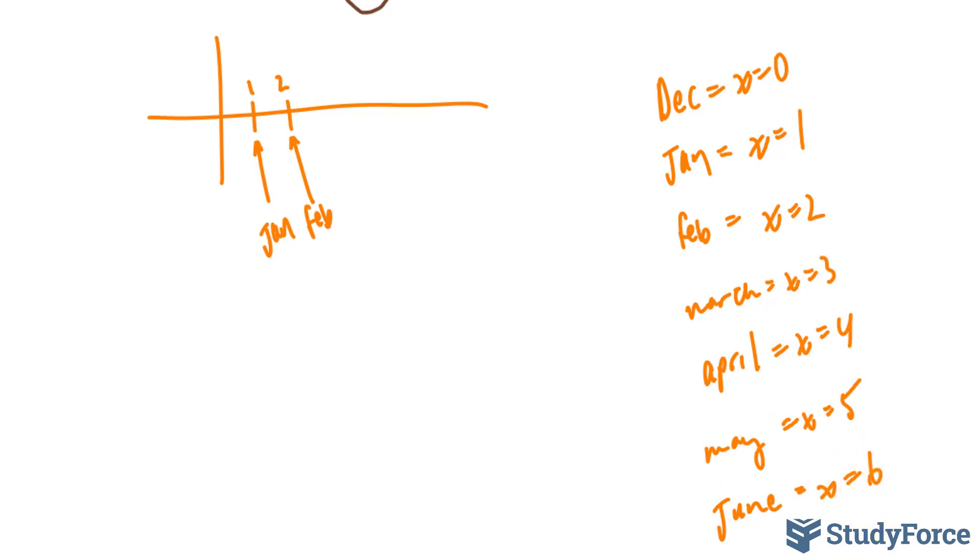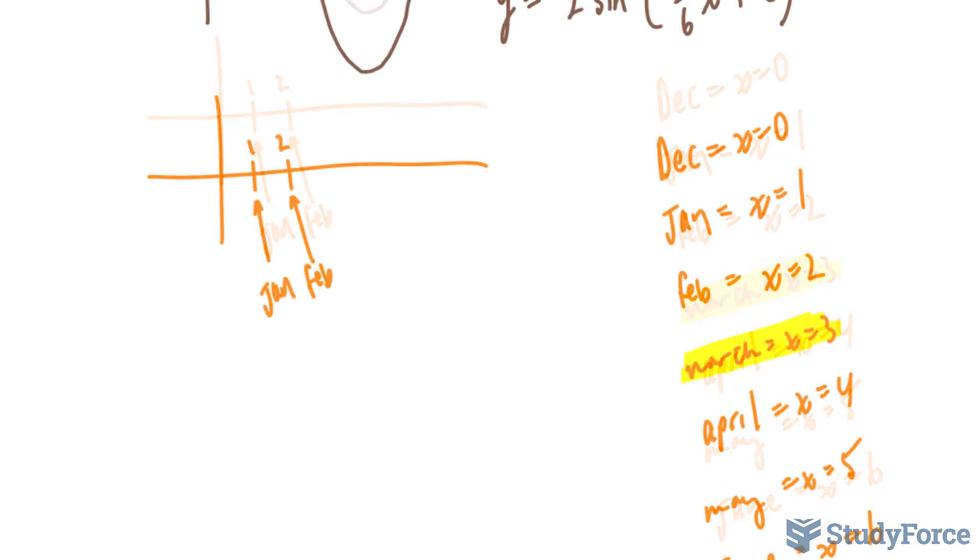Now the middle month here is March. I'll represent that on my graph where this can be 3. And this month represents when the sine wave will begin. So our sine wave begins here.